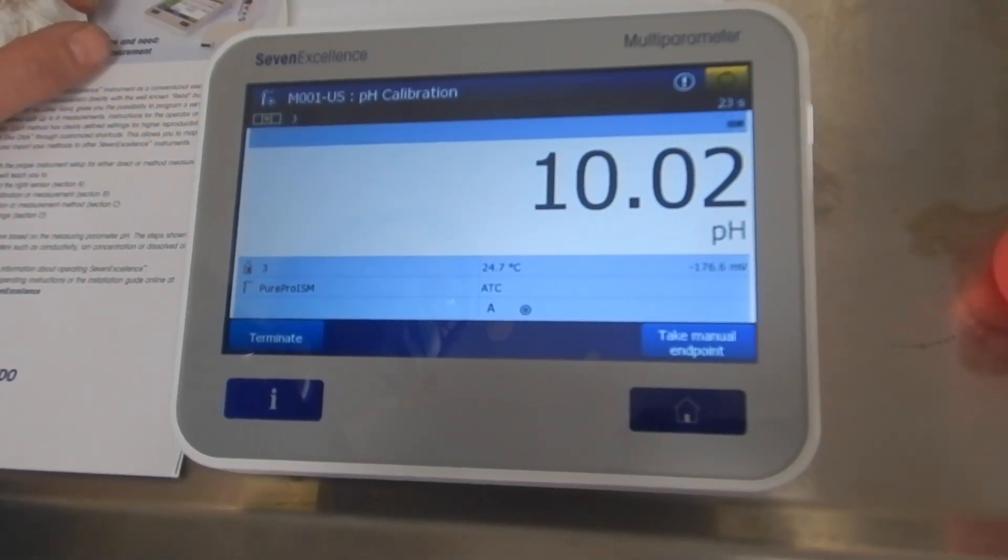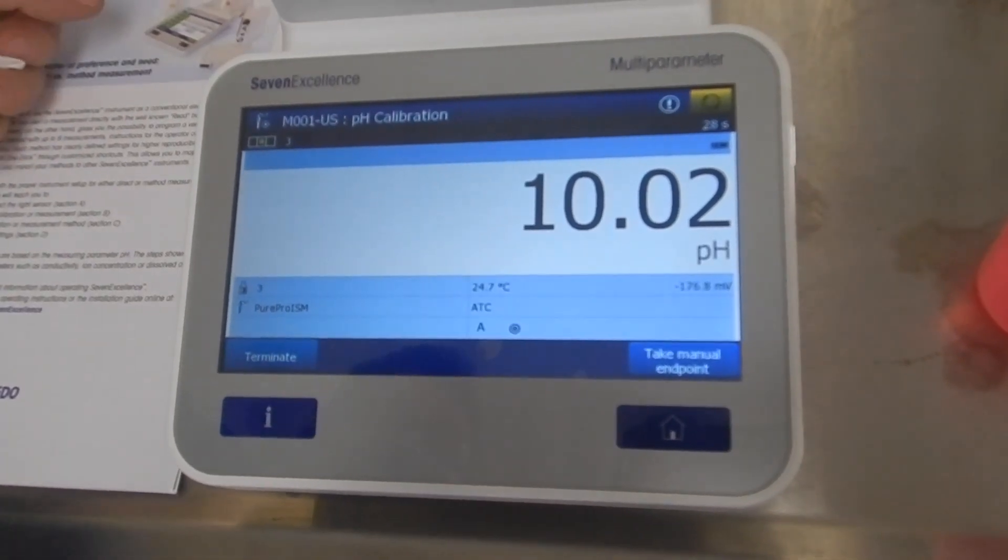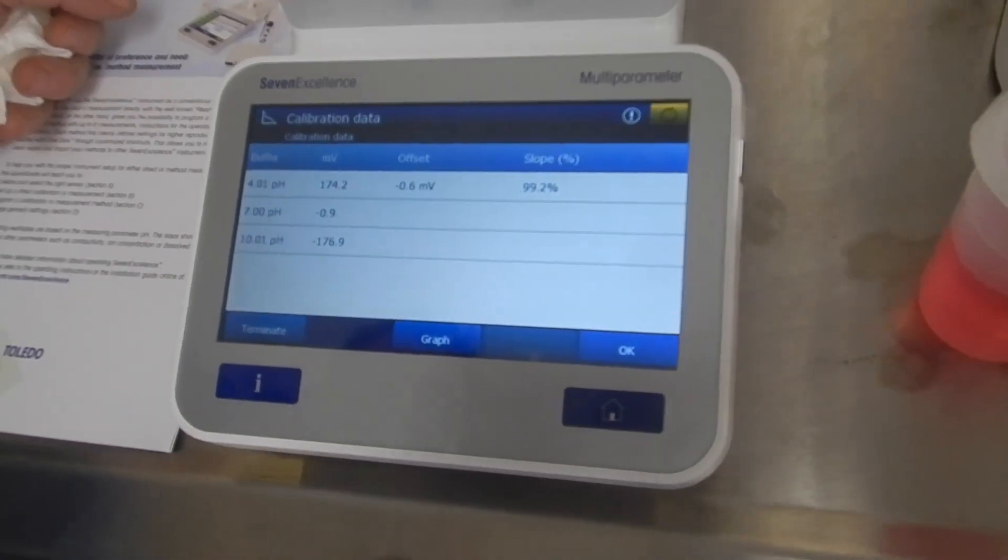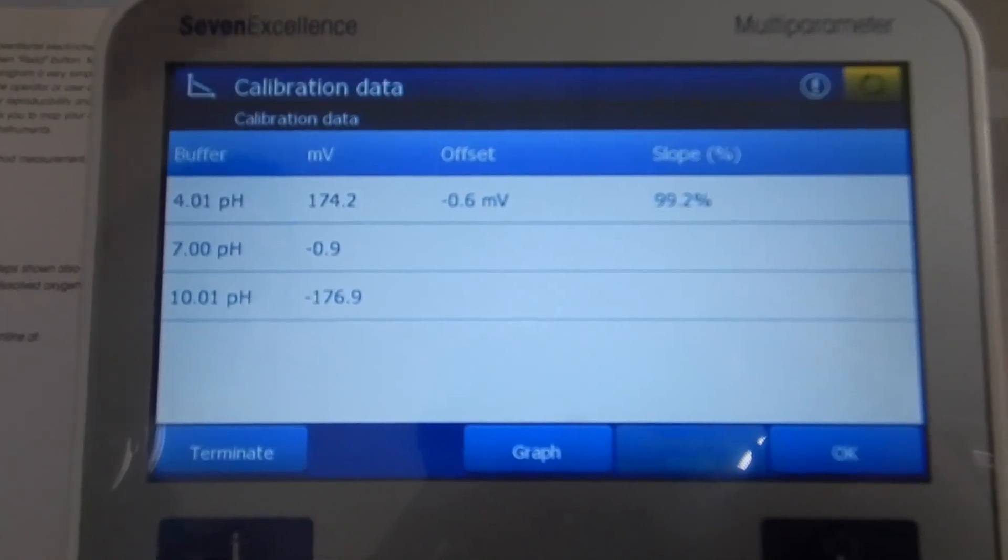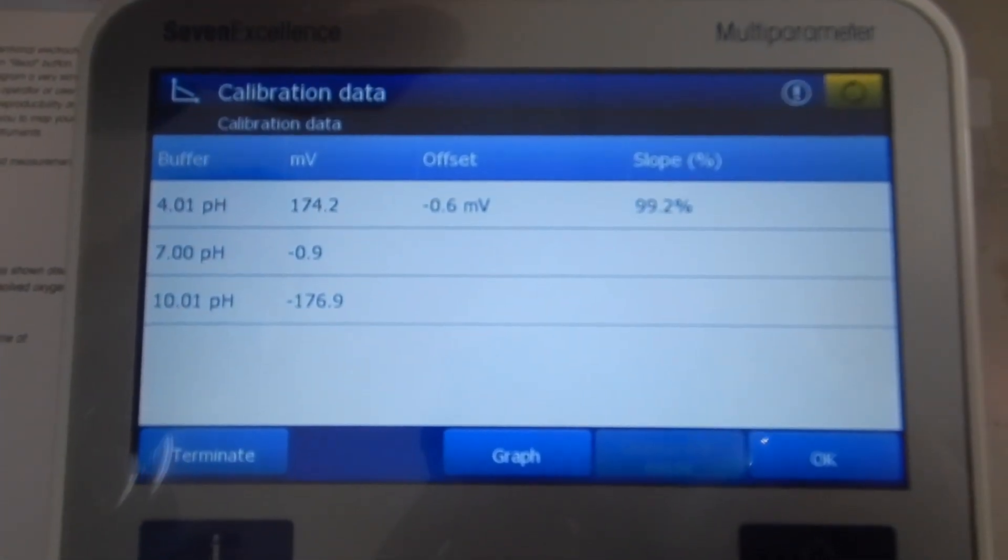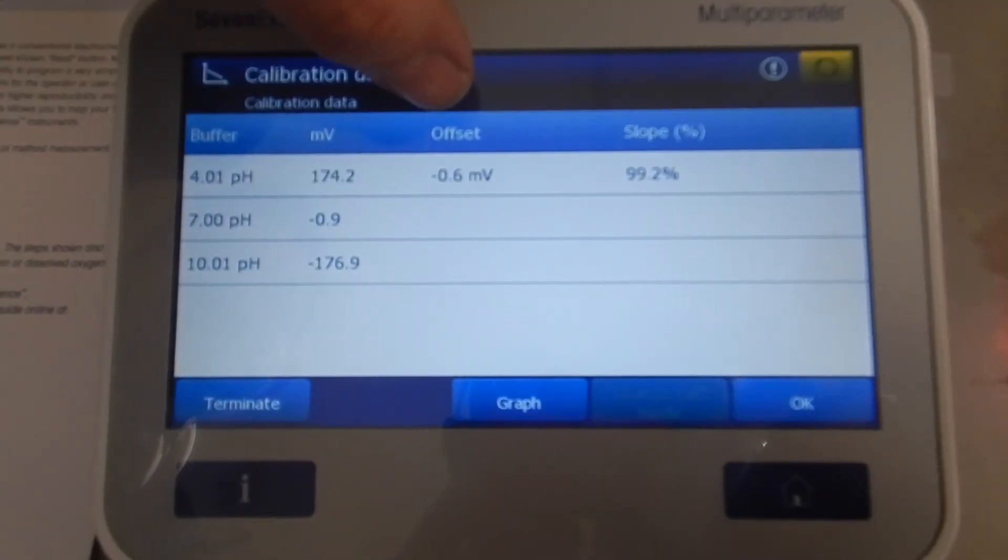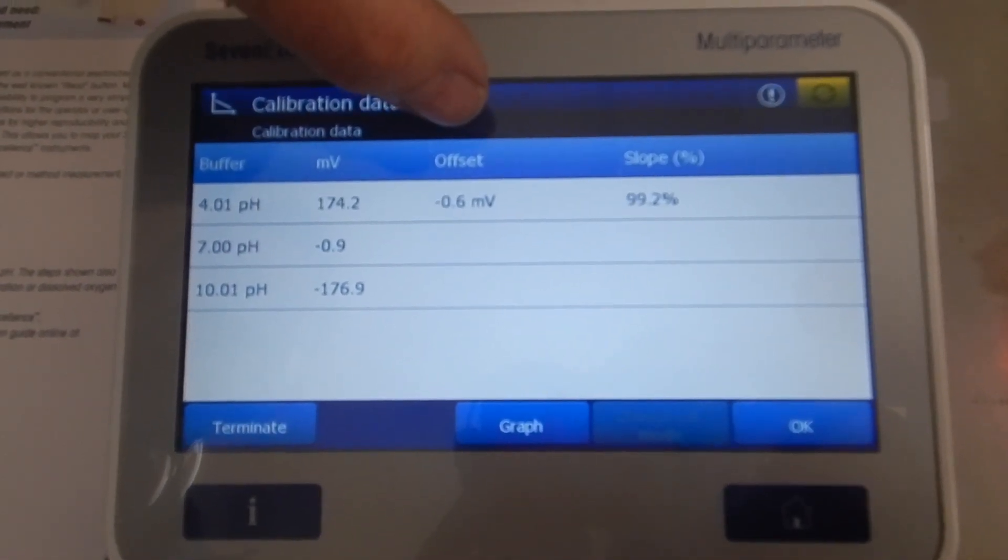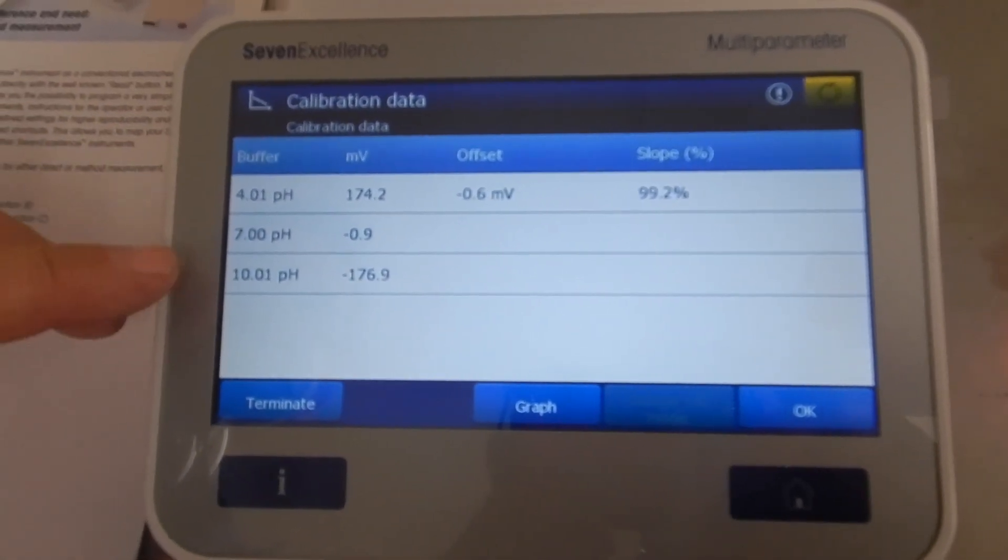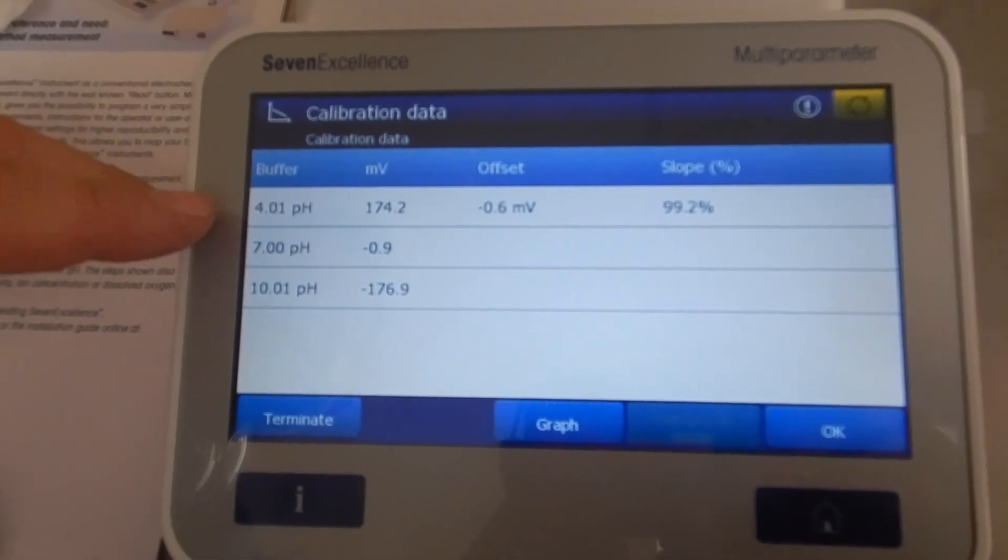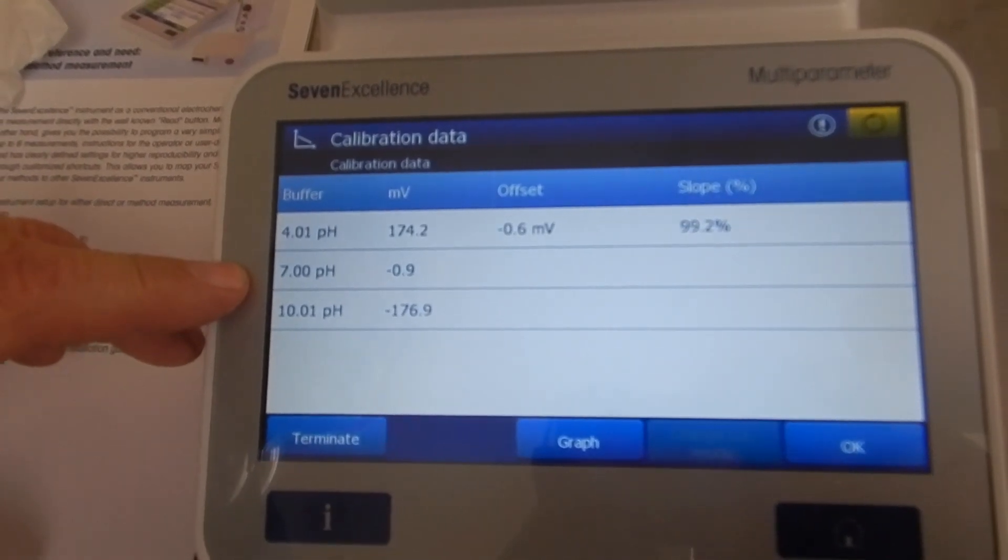Probably there you go, 40 seconds. So this page is a good indication of the probe health. The closer you are to 100 percent, the better. And your offset, closer it is to zero, the better. It's fairly balanced between seven being zero activity on your negative ions and